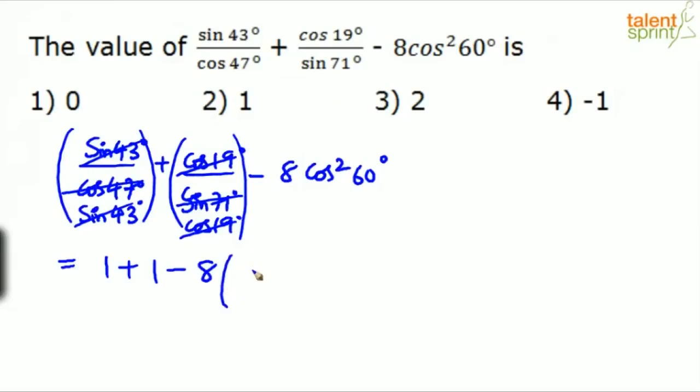What is cos 60? Cos 60 is 1 by 2. Cos squared 60 will be 1 by 4. So 2 minus 2. 2 minus 2 is how much? 0. So your answer for this question would be option 1.